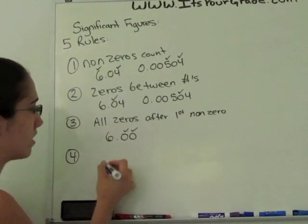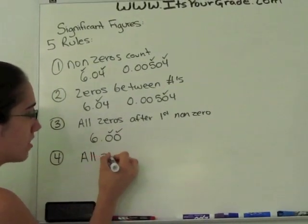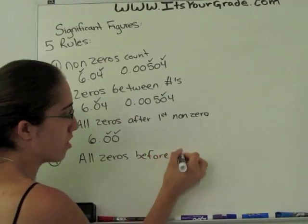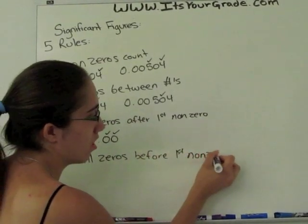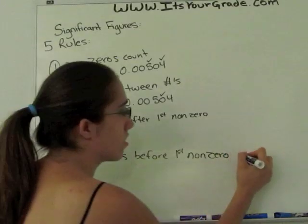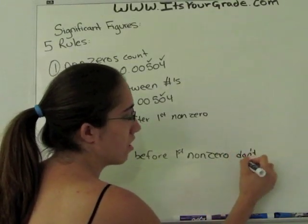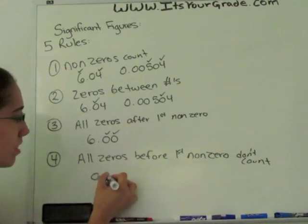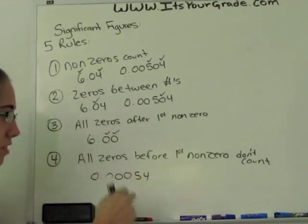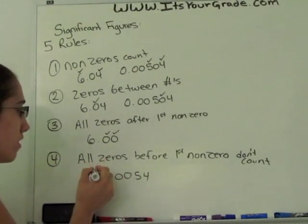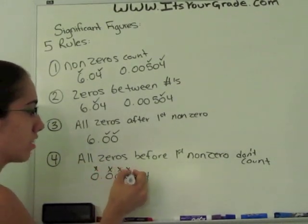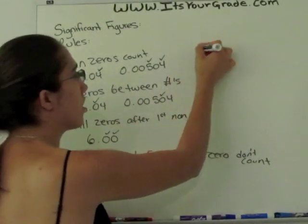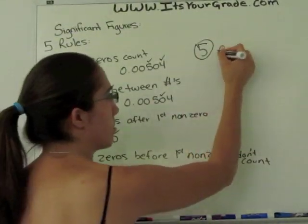The fourth rule is that all zeros before the first non-zero are not significant. So they don't count. If you have 0.00054, this is the first non-zero, these zeros are not significant. They do not count. We don't know those for sure.